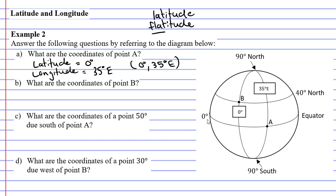Looking at point B now, which is here, we start with our latitude, which is basically the line that goes across ways. And in this case, it's 40 degrees north.